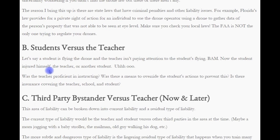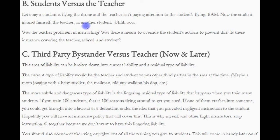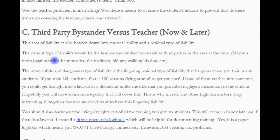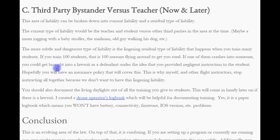Another area of liability is students versus teachers. If the student is flying the drone and the teacher isn't paying attention and the student injures himself, the teacher, or another student, you're in trouble. Was the teacher proficient in instructing? Was there a means to override the student's actions to prevent this? Is there insurance covering the teacher, the school, the student? A third area of liability is third-party bystanders versus teachers, both current and future. The current type of liability involves the teacher and student versus a third party nearby — maybe a mom jogging with a baby stroller, the mailman, or the old guy walking the dog. The more subtle and dangerous type is the lingering residual liability that happens when you train many students. If you train 100 students, that is 100 potential reasons to get sued — if one of them crashes into someone, you can be brought into a lawsuit as a defendant under the idea that you provided negligent instruction.